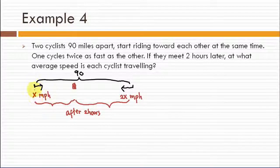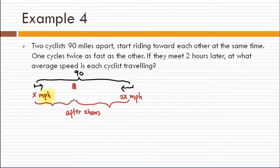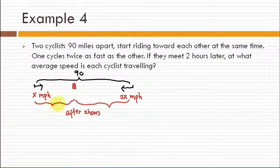Since the speed of the first cyclist is x miles per hour, then the distance traveled by this cyclist after two hours...